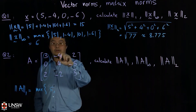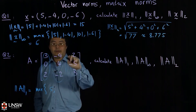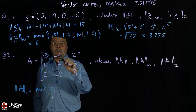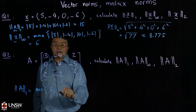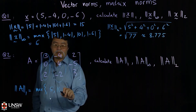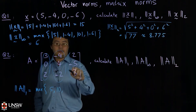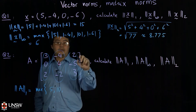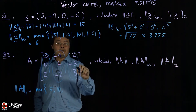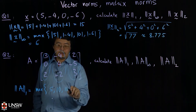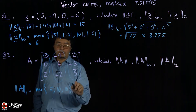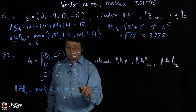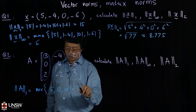The second column sum in absolute value is 4 + 4 + 2, which is 10. And the third column sum is 2 + 5 + 3, which is 10 in absolute value. Then the max of those three numbers is 10.